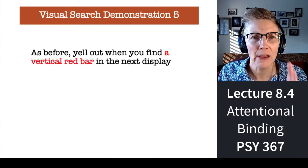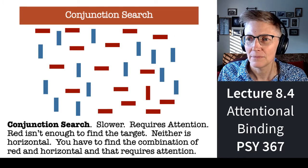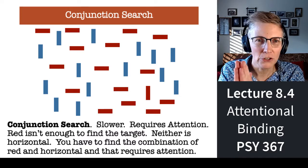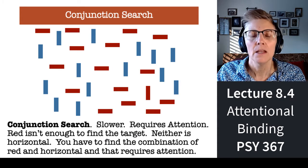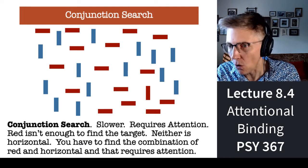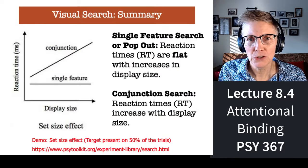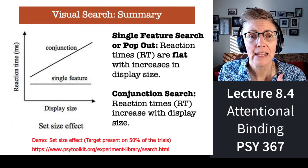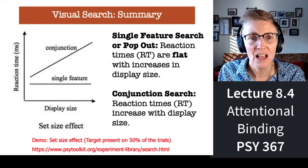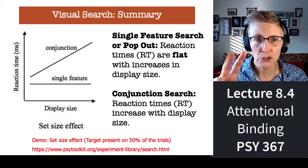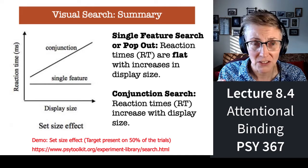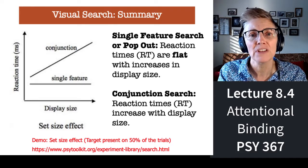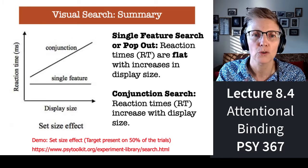How about a vertical red bar in this display? Conjunctive search — because you have to combine vertical and red to identify the target, and that requires attention. You have to deploy your attention all over the display. This slide summarizes what we've talked about thus far: two types of search. The pre-attentive one doesn't require attention — pop-out, really fast. The attention-demanding task requires a combination of features, and how long it takes depends on how many distractors there are in the scene.